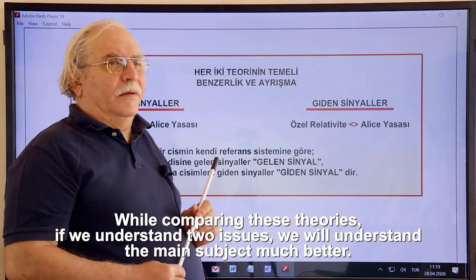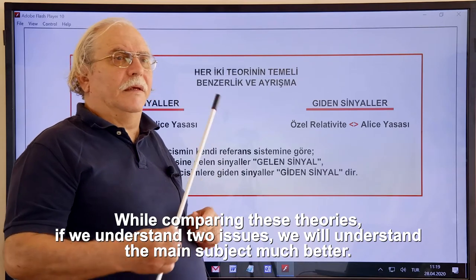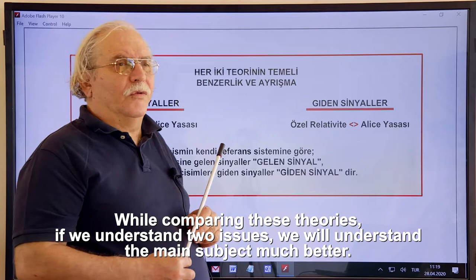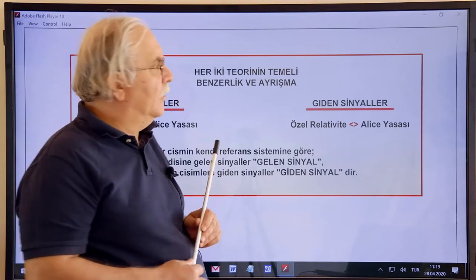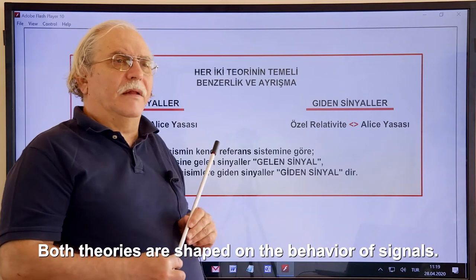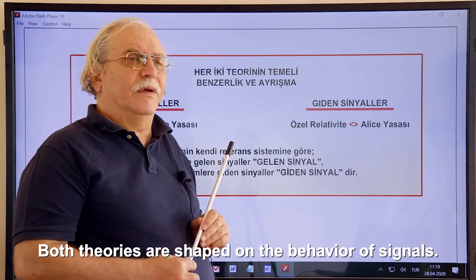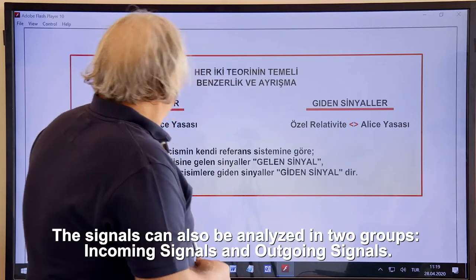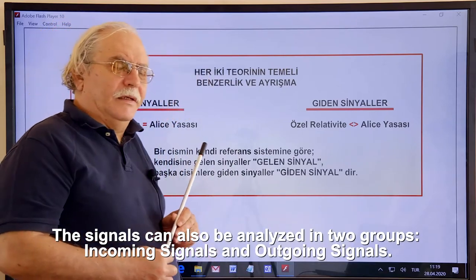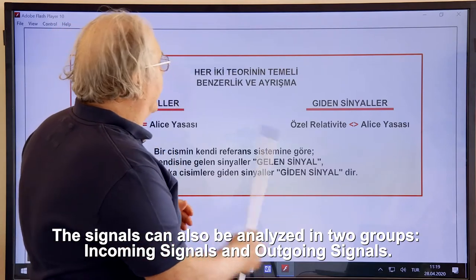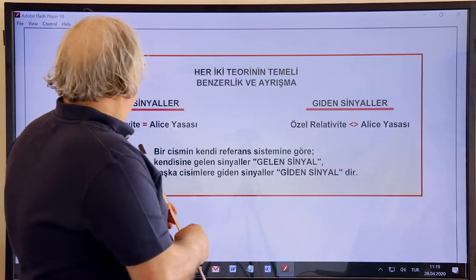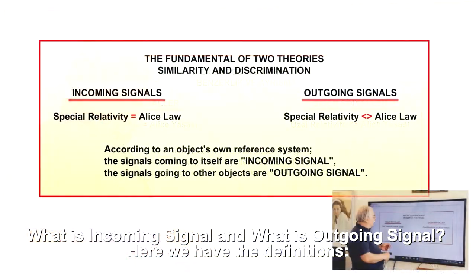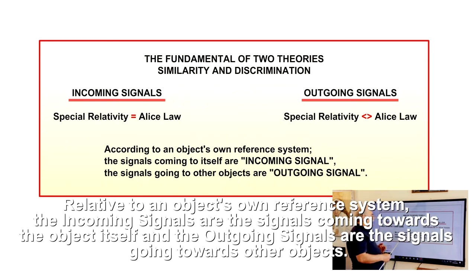While comparing these theories, if we understand two issues, we will understand the main subject much better. Both theories are shaped on the behavior of signals. The signals can also be analyzed in two groups: incoming signals and outgoing signals. Relative to an object's own reference system, the incoming signals are the signals coming towards the object itself, and the outgoing signals are the signals going towards other objects.